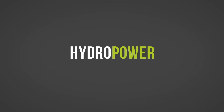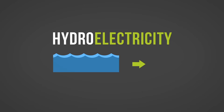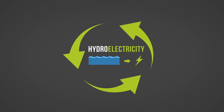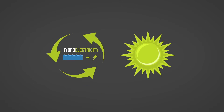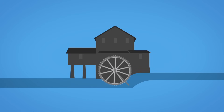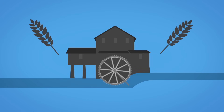Hydropower, or hydroelectricity, refers to the conversion of energy from flowing water into electricity. It is considered a renewable energy source because the water cycle is constantly renewed by the sun. One of the first uses of hydroenergy was for mechanical milling, such as grinding grains.